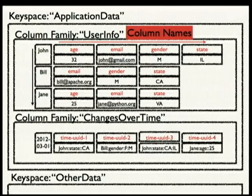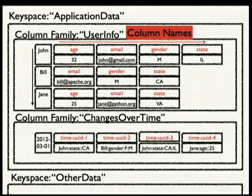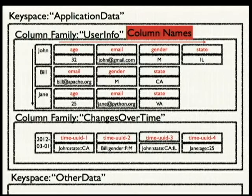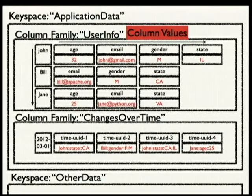Column names are sorted and can be typed. In the first column family — 'user info' — the column names are strings, sorted in string sort order. In the second column family, the column names are time-based unique identifiers, sorted in time order. So time one, time two, time three are going to be sorted in time order. Every column also has a value associated with it, and you can tell Cassandra the types for values to use extra indexing features.